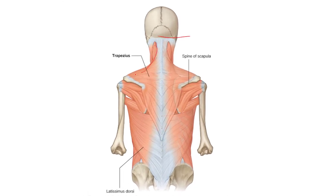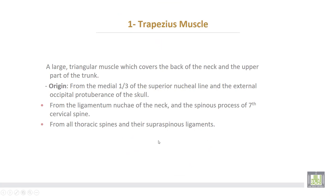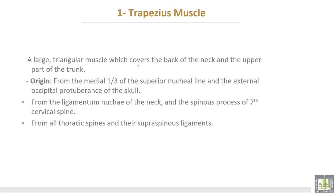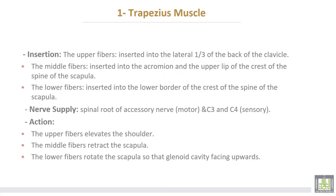The superficial layer is formed by trapezius muscle and latissimus dorsi muscle. The trapezius is a large triangular muscle which covers the back of the neck and the upper part of the trunk. It takes origin from the medial third of the superior nuchal line and the external occipital protuberance of the skull, from the ligamentum nuchae of the neck, the spinous process of the seventh cervical spine, and all thoracic spines and their supraspinous ligaments.